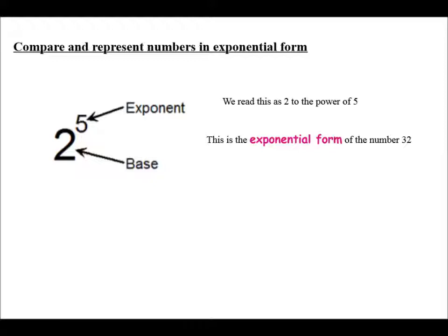We can also write the number like that. 2 is your base, so 2's are multiplied together. How many times? Well, it's to the power of 5, so 1, 2, 3, 4, 5. This is called expanded form.